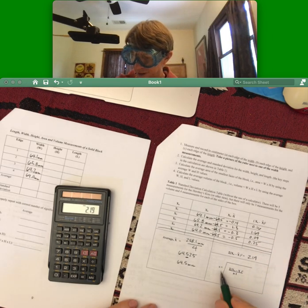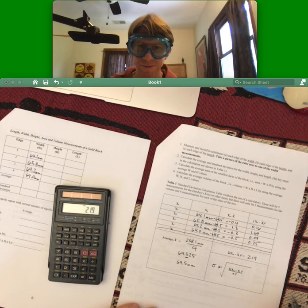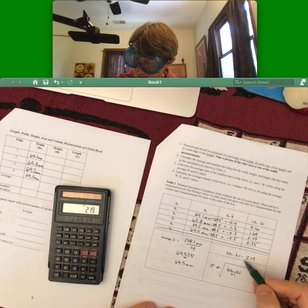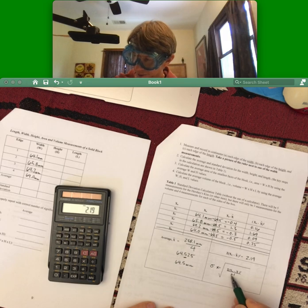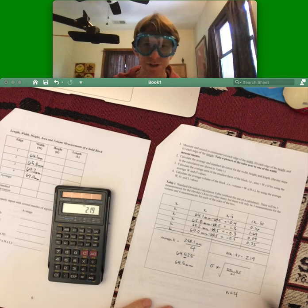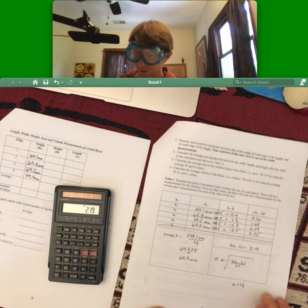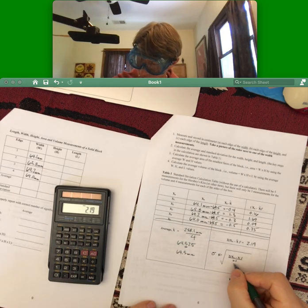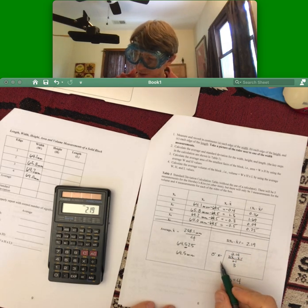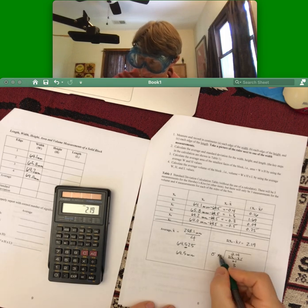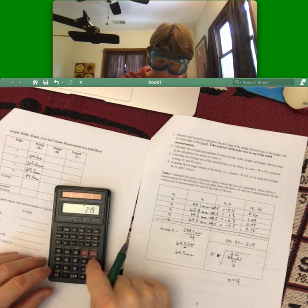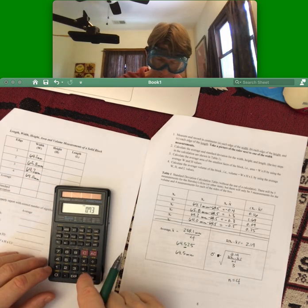And then the standard deviation, which we use sigma for, not s, is going to be this number we've got right here, divided by n minus 1, where n is the number of sample points, which is 4. So n minus 1 will be 3. 2.19 is the number on top. Square root it, and you're going to get your sigma.